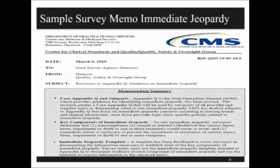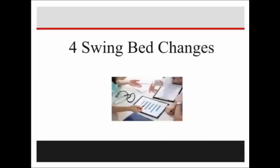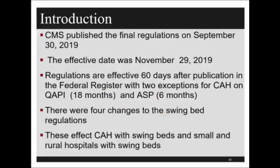One thing you definitely don't want to see is Appendix Q on immediate jeopardy. Immediate jeopardy is when there is imminent harm to a person or patient based on a standard or condition of participation that hasn't been met. The four swing bed changes CMS put into effect were published in November. Regulations are effective 60 days after Federal Register publication, but CMS gave extensions due to COVID — 18 months for QAPI (Quality Assurance Performance Improvement) and 6 months for the Antibiotic Stewardship Program.